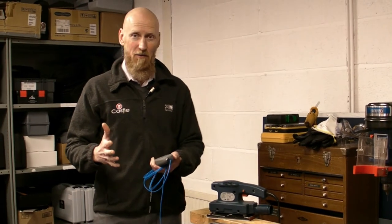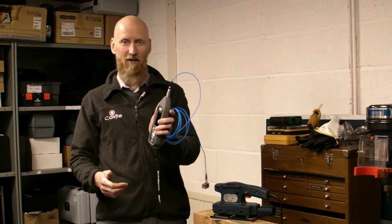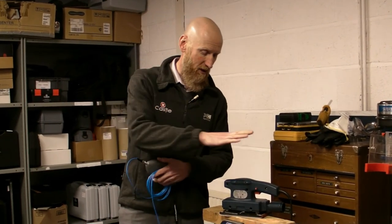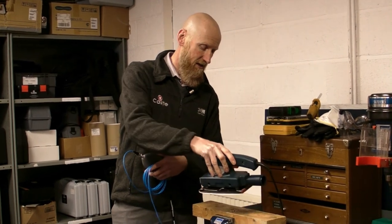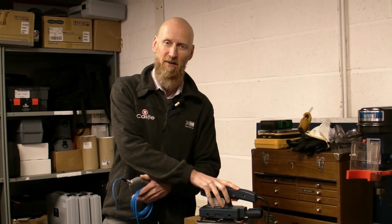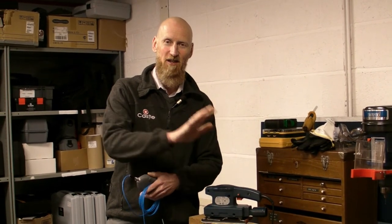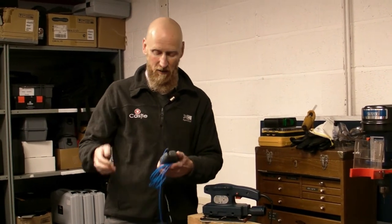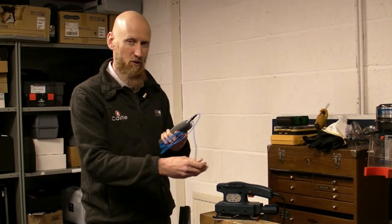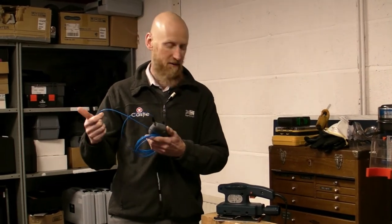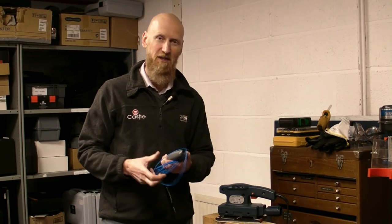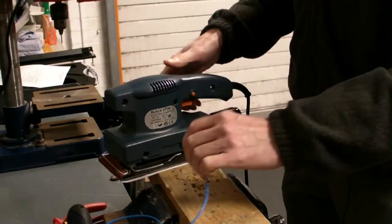Right, here we are. So I have my VEB A8 vibration meter, and we've got a sanding machine here that we're going to do some pointless sanding on a bit of wood that absolutely doesn't need to be any flatter than it is. So just for the sake of this demonstration, I'm going to fix the accelerometer onto the tool.